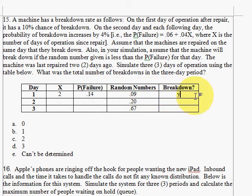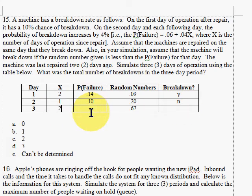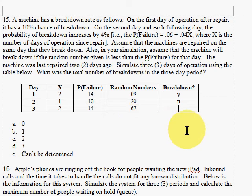Now the machine is repaired, so we're back to day one with a 10% chance of failure. Our random number is 20 — is 20 less than 10? Nope, so no breakdown. Now we're back to our second day since it didn't break down, so we're back to a probability of 14%. Our random number is 67 — is 67 less than 0.14? No. So in our three-day period, how many breakdowns did we have? We had one breakdown. Our answer is B.